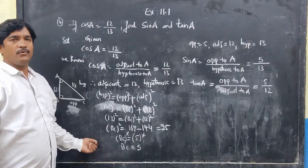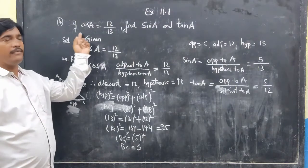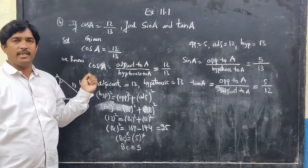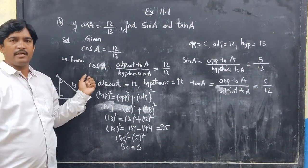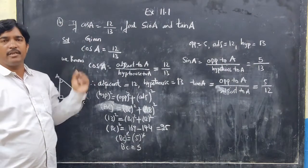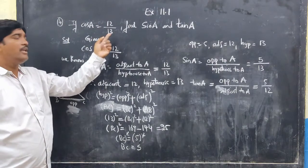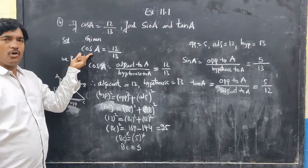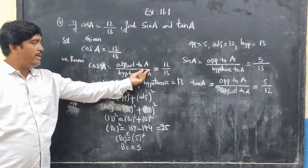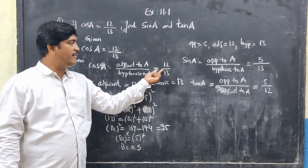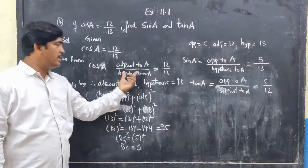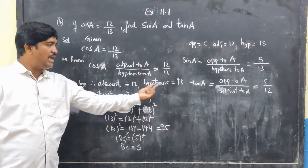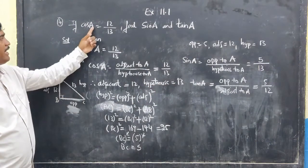We now solve the fourth problem of exercise 11.1. The given is cos A = 12/13. Here the trigonometric ratio value is given directly. We know cos A = adjacent to A / hypotenuse = 12/13. From this, adjacent = 12 and hypotenuse = 13.